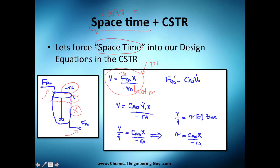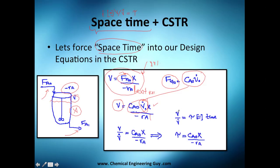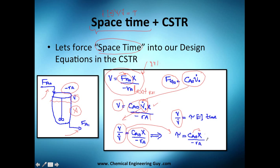To introduce space time, substitute FA0 = CA0 · v₀ into the design equation. The volumetric flow rate cancels with the volume to give τ. So after substitution, space time τ = CA0 · X / (−rA), where CA0 is the initial concentration, X is conversion, and the rate is evaluated at exit conditions.